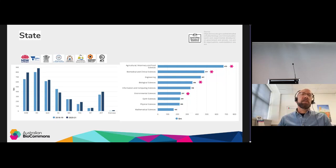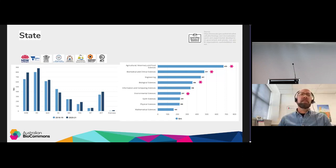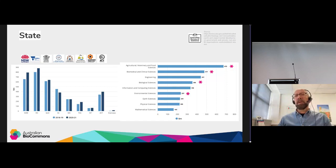Showing the spread across states: the left panel shows the distribution between each state, roughly proportionate to population. On the right, the field of research that states are funding is shown, with the bars highlighted with pink asterisks representing life science-related fields — a good chunk of that research funding is going to life sciences in this country.